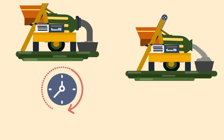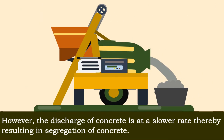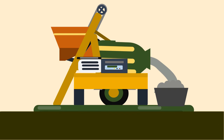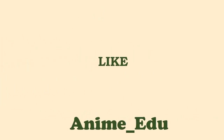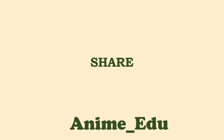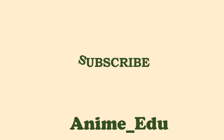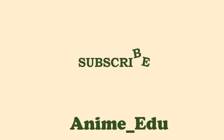The advantages of this type of mixer are that the time and effort required for tilting the drum is minimized. However, the discharge of concrete is at a slower rate, which can result in segregation of concrete.